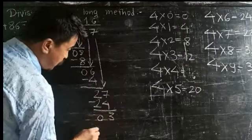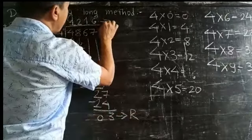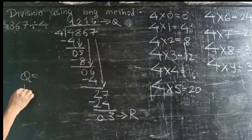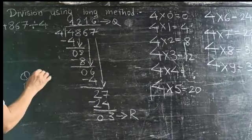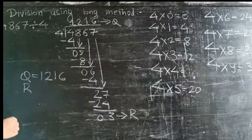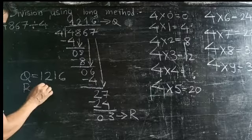This is the quotient. The quotient is 1216, and the remainder is 3.